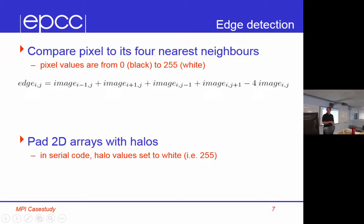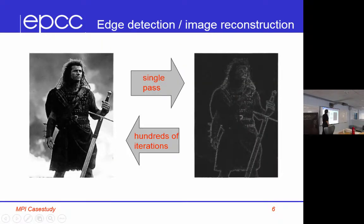So the edge detection image we use is very simple. We compare a pixel to its four nearest neighbours. So the pixels are between 0 and 255, black to white. And we just say the edge is the image, the pixel to the left and the right, up, down, minus four times the local value. And it's quite obvious, actually, because you're just saying the edge is the difference between a pixel and the average of its four neighbours. So if a pixel has the same value as its four neighbours, then you get 4 minus 4, you get 0. But if a pixel has a large difference from its four neighbours, then you get a finite value. So you're just saying, is this pixel different from its neighbours? And if it's very different from its neighbours, you call that an edge. And that actually does work quite well.